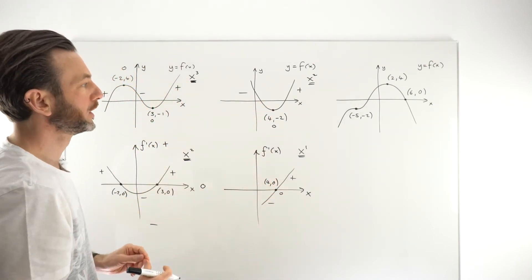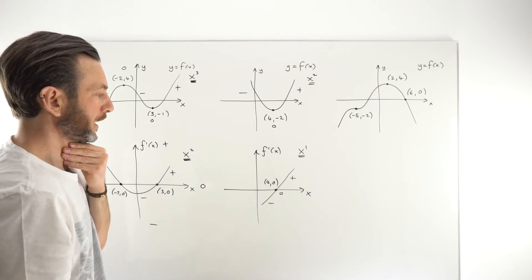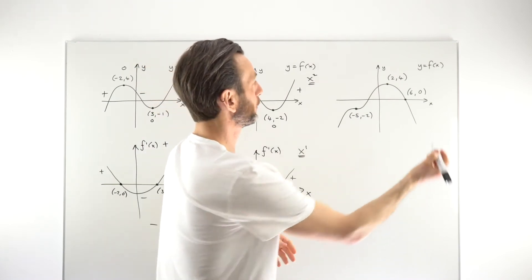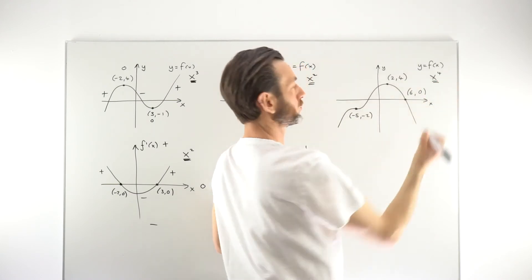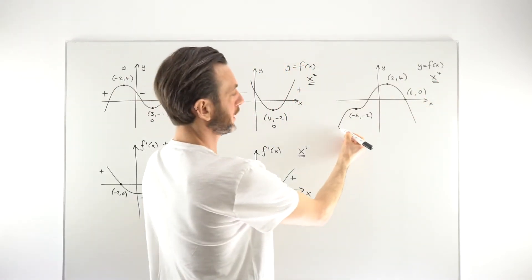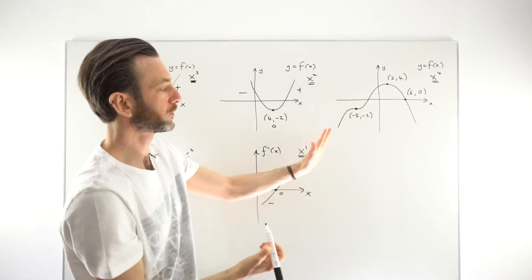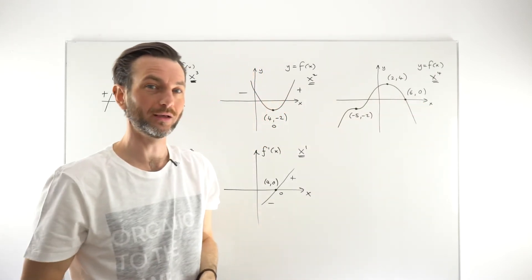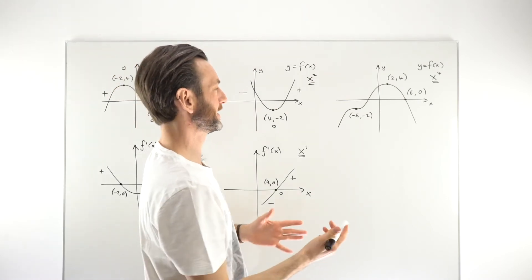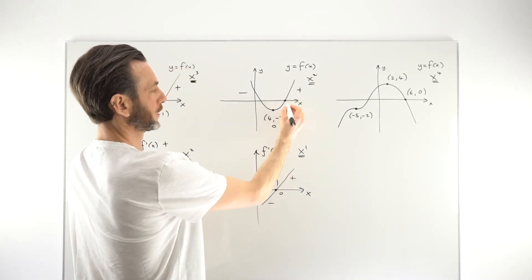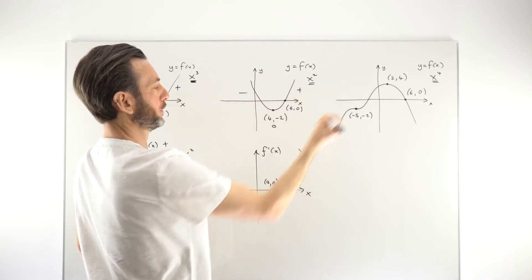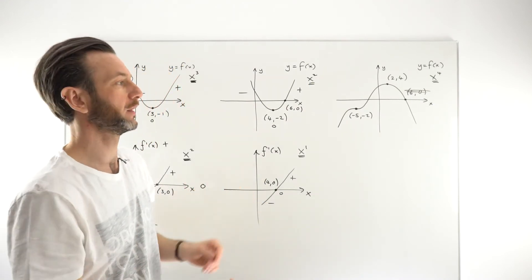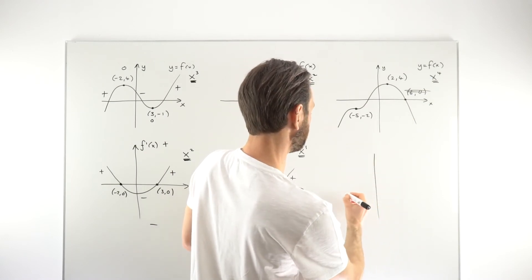One thing to be slightly careful with is not confusing stationary points and roots. This is highlighted in the next question. This is a quartic function — they can make all sorts of weird-shaped graphs and often have different types of stationary points. This one is a rising point of inflection, and this one is a maximum turning point. Notice that the root at (6, 0) is also highlighted on the sketch — but that's not a stationary point, so we don't need it. Be careful not to use points you don't need; that's a common trick to catch students out.